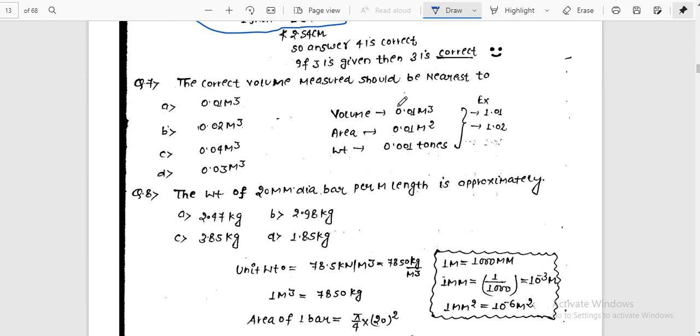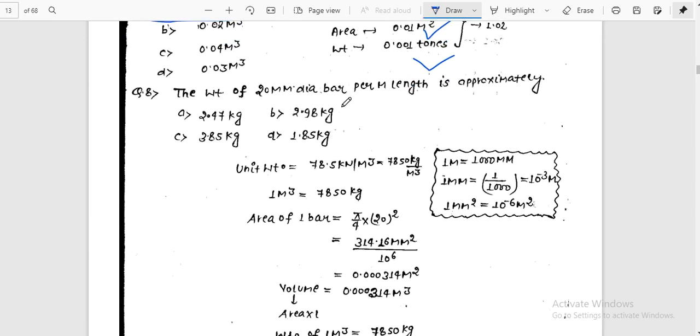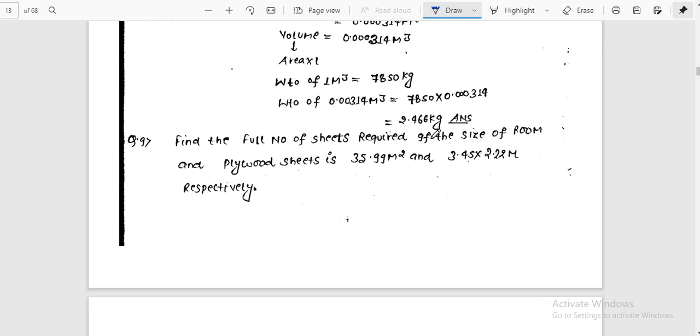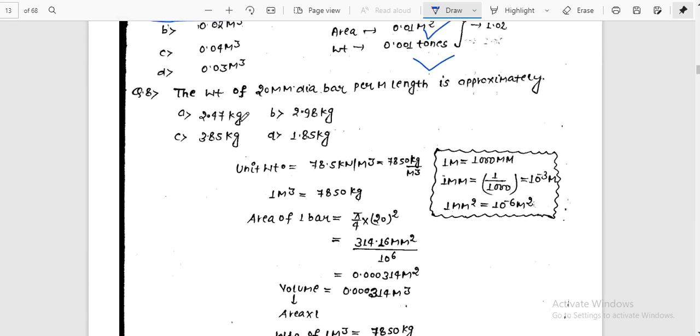The correct volume measured should be nearest to 0.01 cubic meter. For a 20mm diameter bar per meter length, the unit weight of steel is 78.5 kN/m³, or 7850 kg/m³. The area of one bar is π/4 × 20² mm. Calculating in meters gives 0.0314 m². Volume is area times one meter height = 0.0314 m³. Weight equals 0.0314 × 7850 = 2.466 kg.